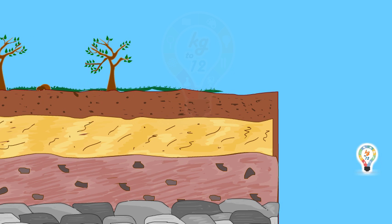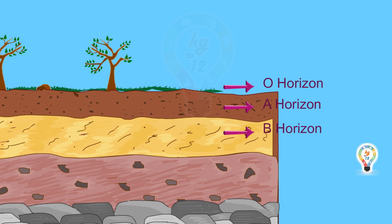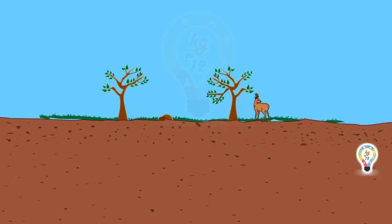They are called O-horizon, A-horizon, B-horizon, C-horizon, and bedrock. The first layer is called O-horizon. This layer contains dead organic matter, consisting mostly of decaying animals and plants.